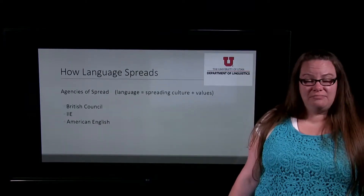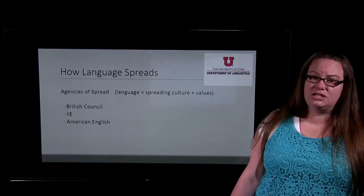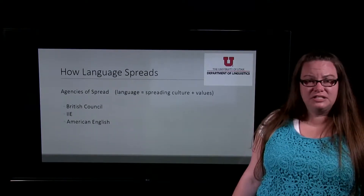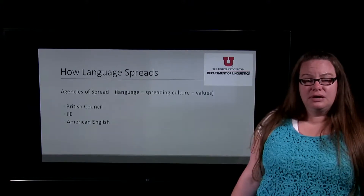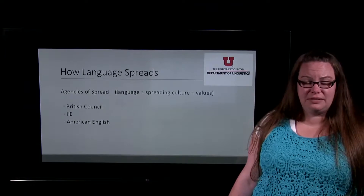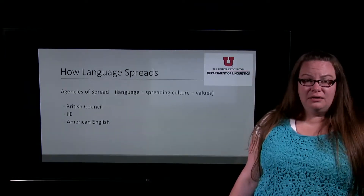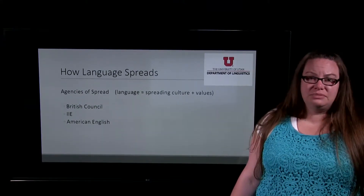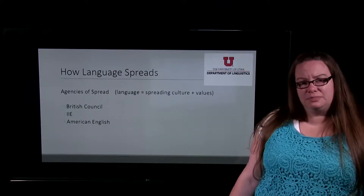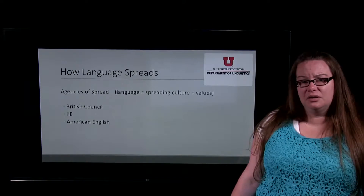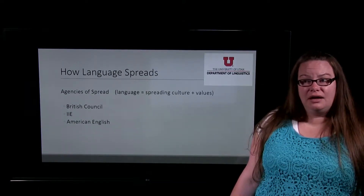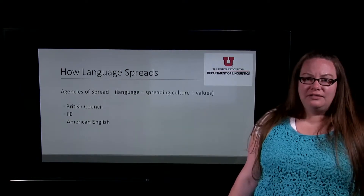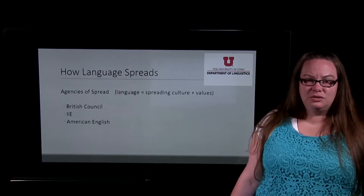The United States is no exception. We have many programs used to help spread American English and American values. We have IIE — the American International Education Exchange — which umbrellas programs like Fulbright, where we send people to or bring people from other countries. Under the Fulbright umbrella, people go to other countries as English teaching assistants. We also have an entity called American English that produces materials, a website, a blog, and a Facebook page to help teachers teaching all over the globe. All of these efforts are aimed not only at giving them the English, but also forming connections.